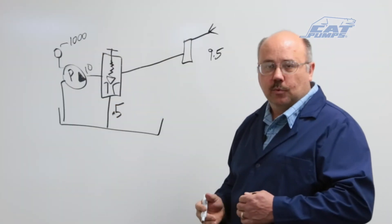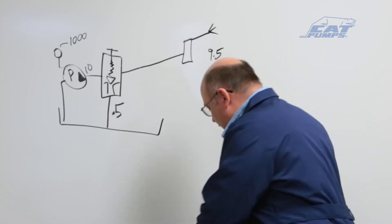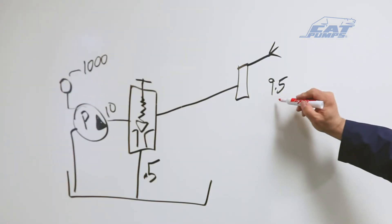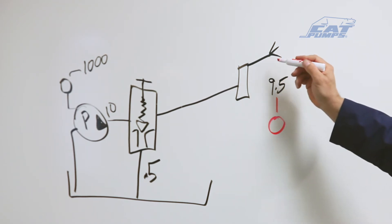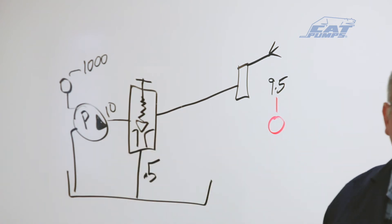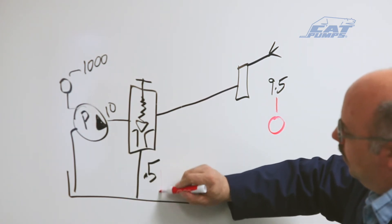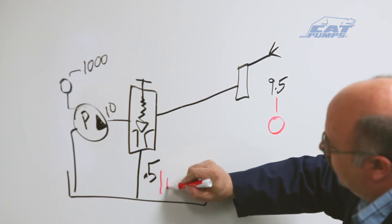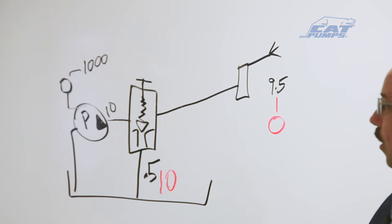Now the pressure override comes into effect when I release the trigger gun. What happens then is this flow will go down to zero because we no longer have any flow out here. This flow stays at 10 all the time. That's the definition of a positive displacement pump. So this flow here will change to 10 gallons per minute. So that's quite a change.